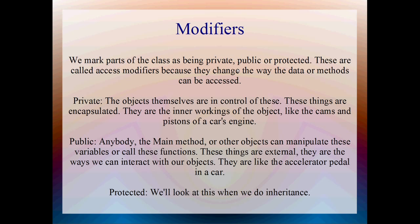Okay, so this is back to encapsulation. This is how we specify that things are hidden. We mark parts of the class as being private, public or protected. And these are called access modifiers because they change the way that the data or the methods can be accessed. So the first one, private, means that only the objects themselves are in control of this. So these things are the inner workings of the object. And these are the things that we want to hide from ourselves, basically.